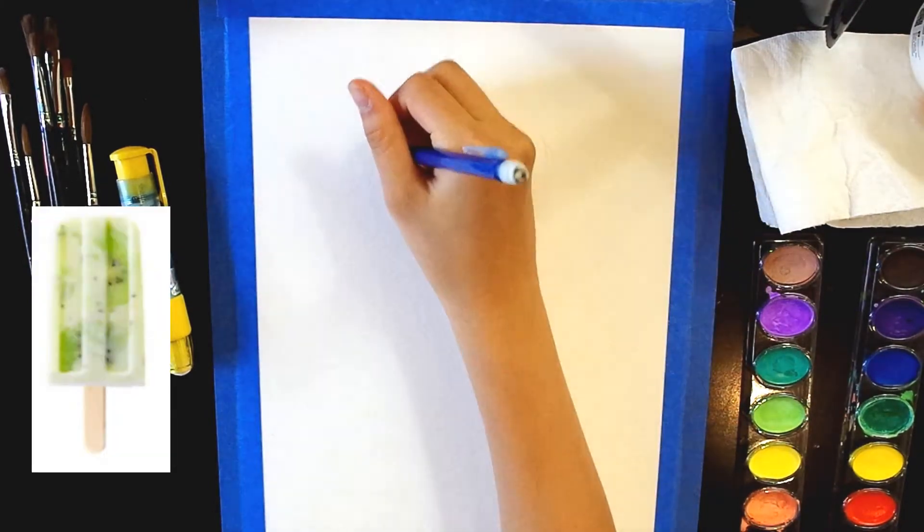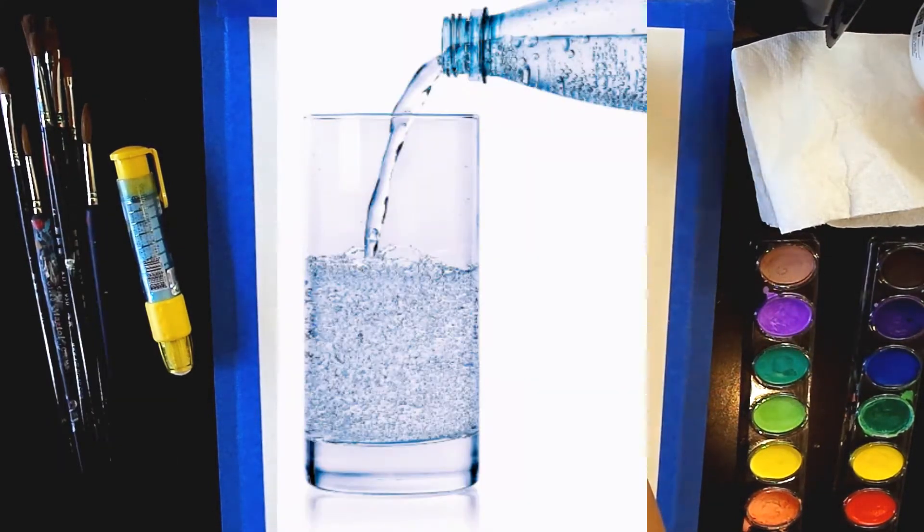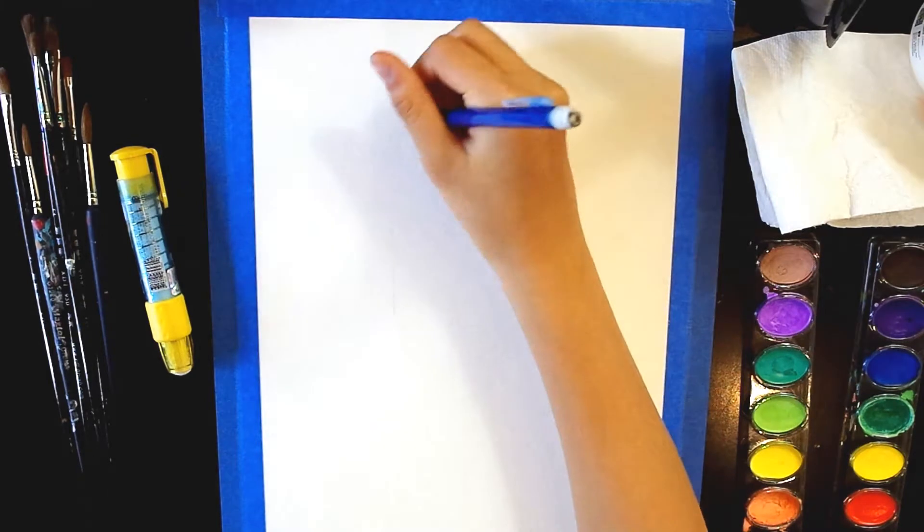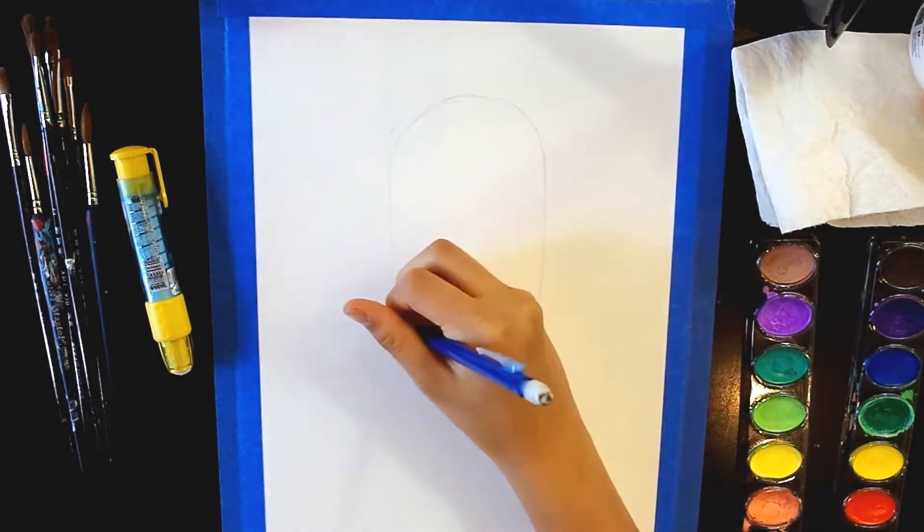Today I will be showing you how to draw a popsicle using watercolors and colored pencils. To start, tape a piece of watercolor paper down to your table.